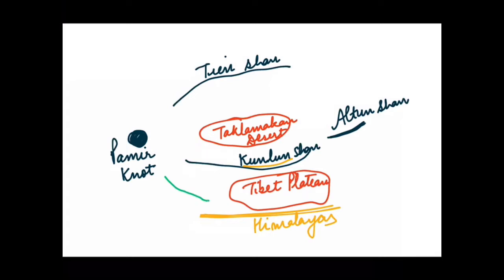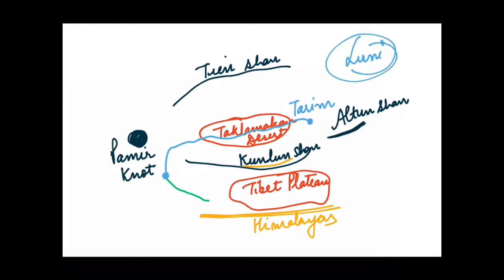From the Karakoram Ranges, there is a river called the Tarim River, which passes through the Taklamakan Desert and then vanishes — it doesn't fall into any ocean. This is an east-flowing river. Similarly, the Luni River in India, which flows through the Thar Desert, also doesn't fall into any ocean. Thus, it doesn't make any delta or estuary.